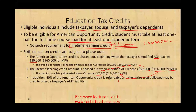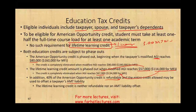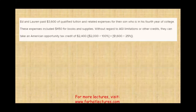40% of the American Opportunity Credit is refundable and 60% is non-refundable. Refundable means even if you don't have any tax liability, you'll get 40% of it back. The entire credit allowed may also offset the taxpayer's AMT. The Lifetime Learning Credit is non-refundable and does not offset AMT liability. So the American Opportunity Credit is better — it's refundable, it's worth up to $2,500, and it offsets your AMT.